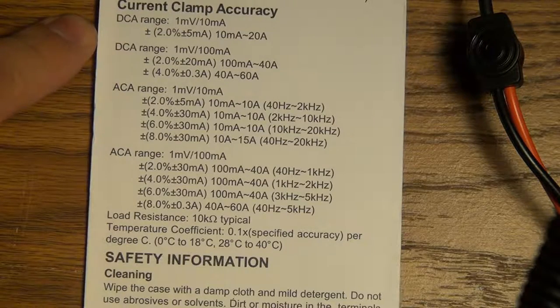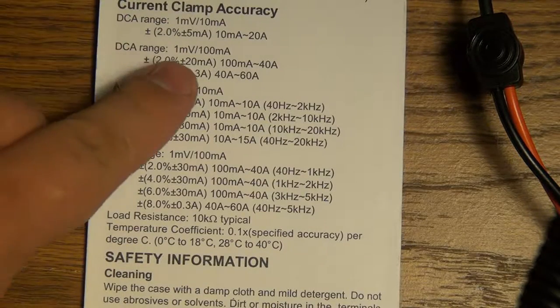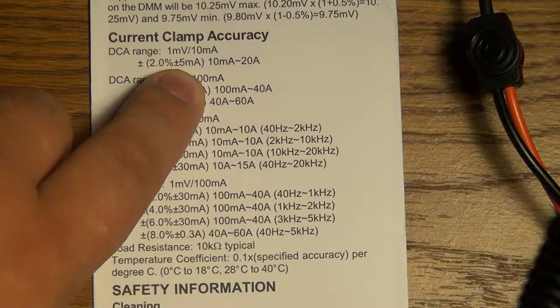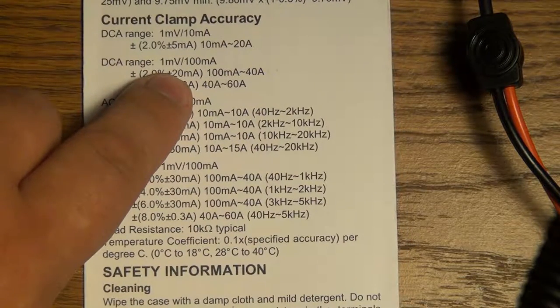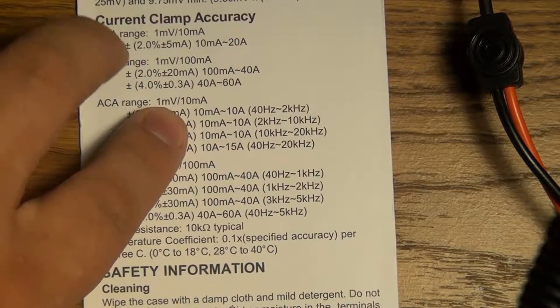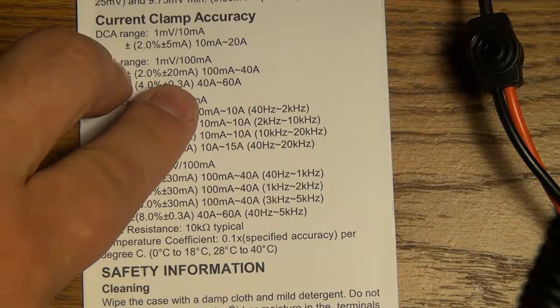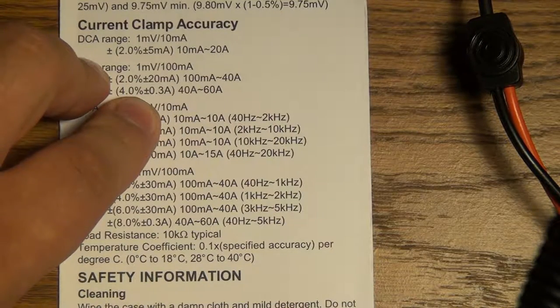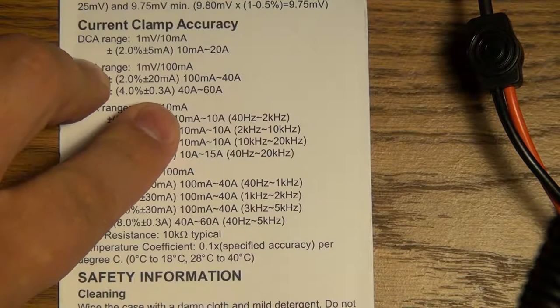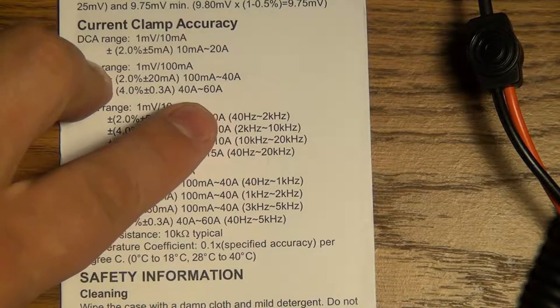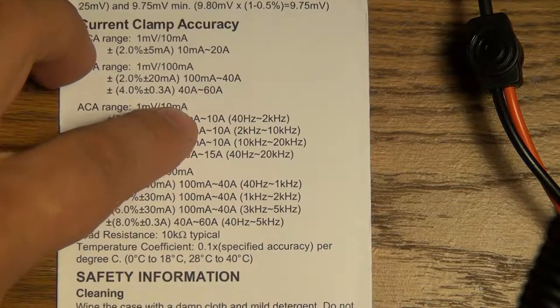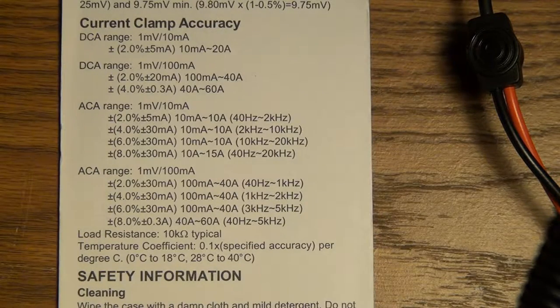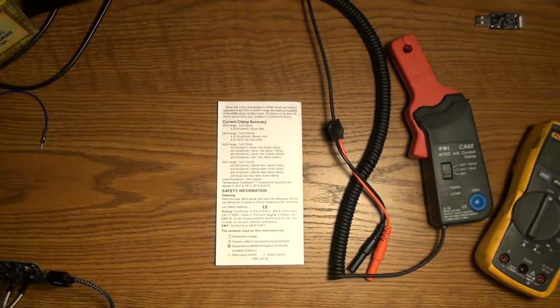The DC amps range is, on the one millivolt per 10 milliamps scale, you get an accuracy of 2% plus minus 5 milliamps, and then on the one millivolt per 100 milliamps scale, you get a 2% plus minus 20 milliamps between 100 milliamps and 40 amps, and then a 4% plus minus 300 milliamps on the 40 amps to 60 amps. So this is definitely not the most accurate piece of equipment. But now let's take a look at how you actually use it.